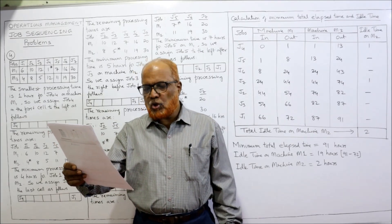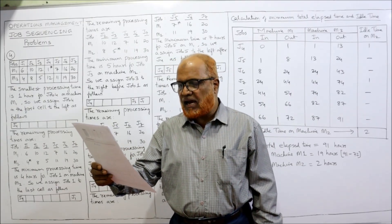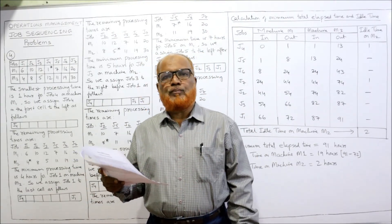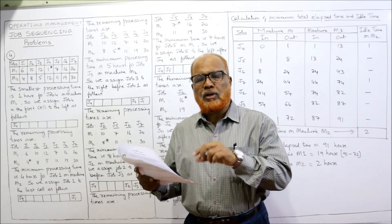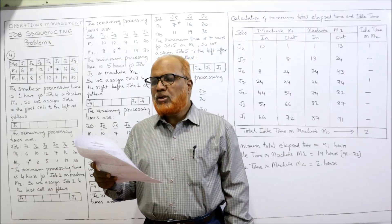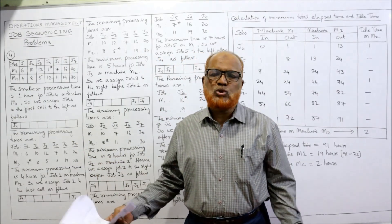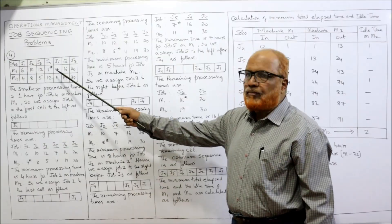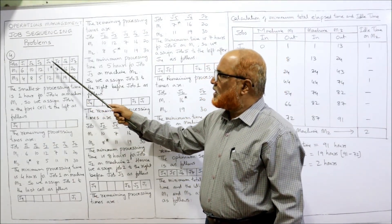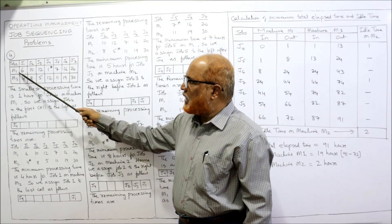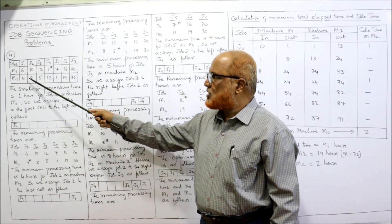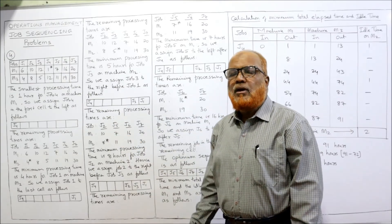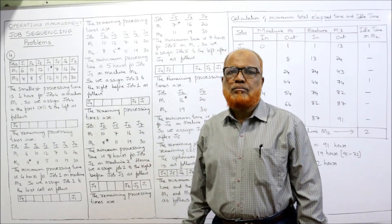Fourth problem: jobs are J1, J2, J3, J4, J5, J6, and J7 — seven jobs — and two machines, M1 and M2. The processing time for each job on each machine is given. Find the total elapsed time and idle time. The processing times on M1 are 6, 10, 12, and so on; on M2 they are 6, 8, 4, 8, 5, 12, and so on. This is the complete information given in the problem.